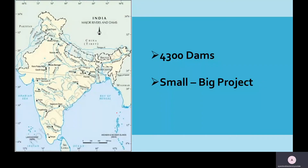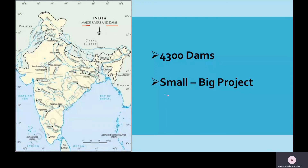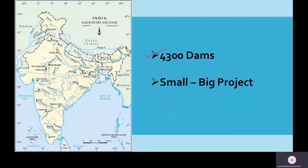This is the textbook image provided in the third chapter, showing the major rivers and dams constructed on them. As per a 2020 survey, there are about 4,300 dams constructed in India, small or big, across various rivers. These dams act as reservoirs for extra water accumulated during the rainy season, protecting us from floods and helping in power generation.